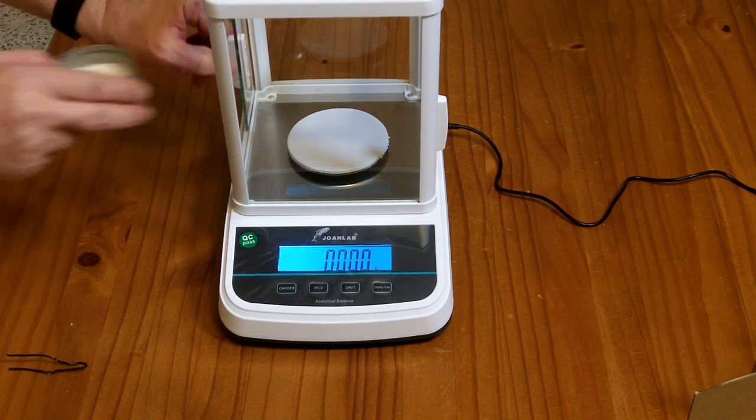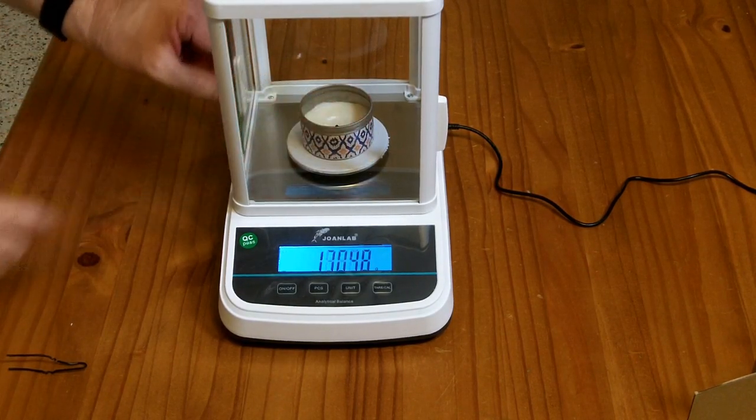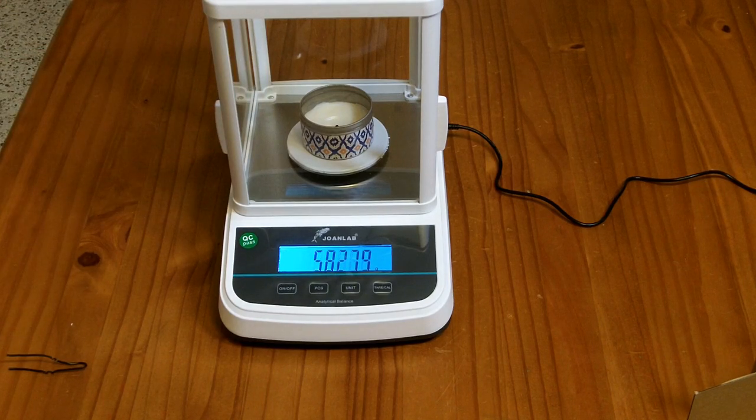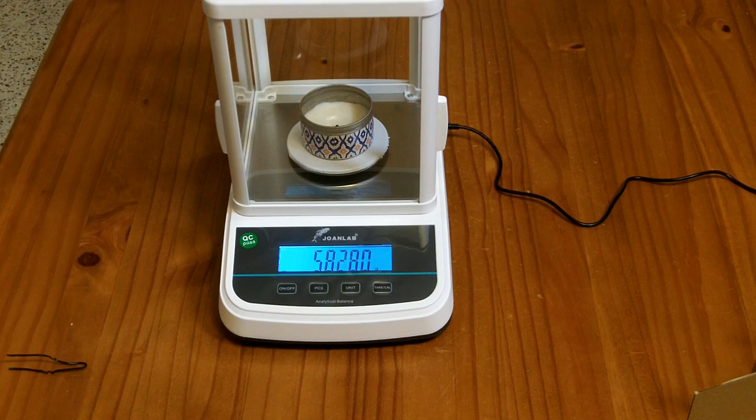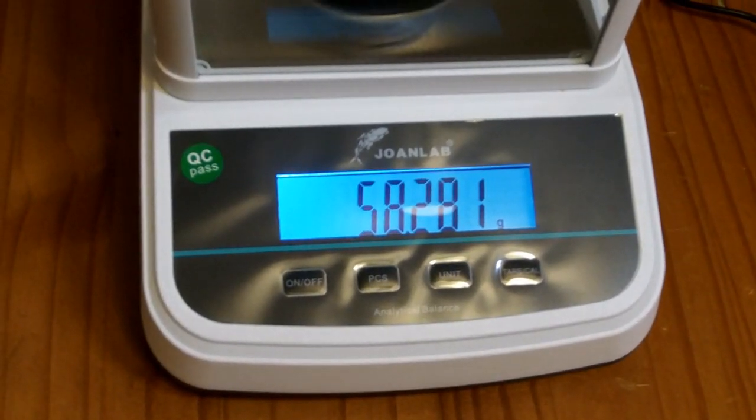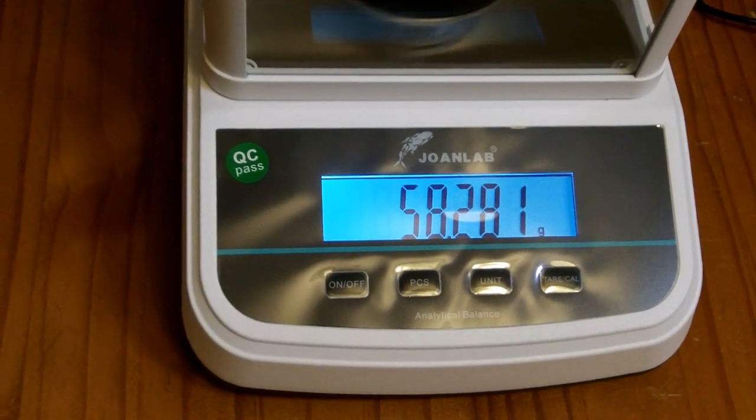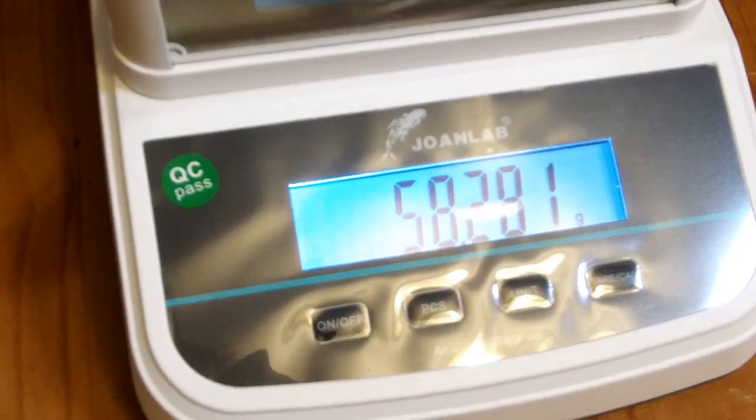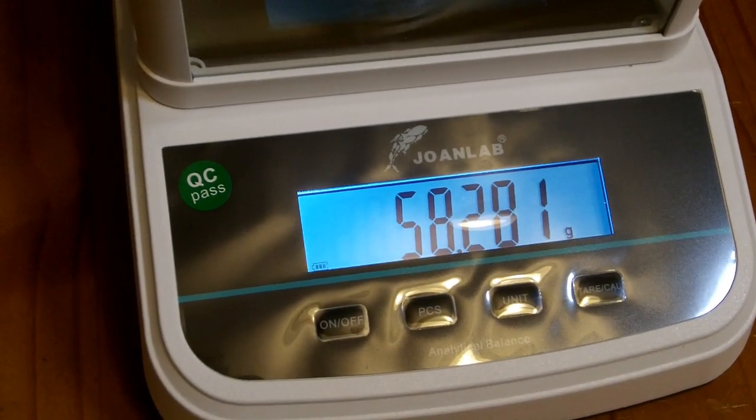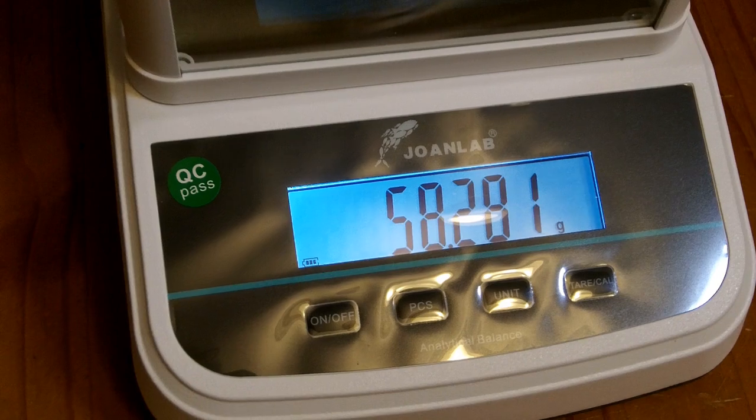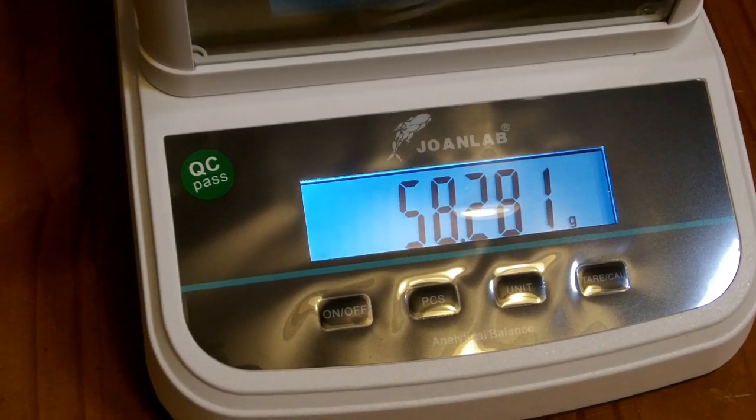Alright, so now we put the candle after it's been burnt for 20 seconds on. And it is 58.280 grams now. Or maybe 58.281, depending on how I walk around the table. Alright, so 20 seconds of burning this candle is somewhere between 28 and 29 thousandths of a gram worth of wax that has been burnt.